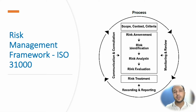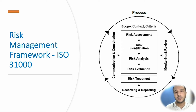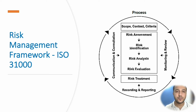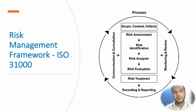Whenever we are doing a risk management activity, we have to ensure that the scope, context, and criteria are taken into account. Scope refers to what is the engagement scope for which you are doing a risk assessment — it could be at the engagement level, or the scope could be at the company's entity level.